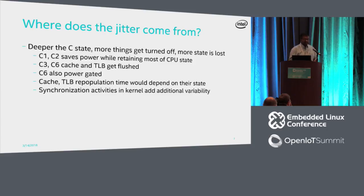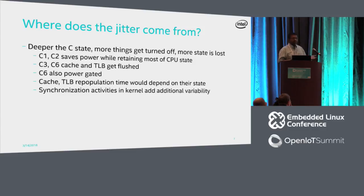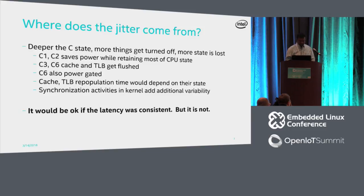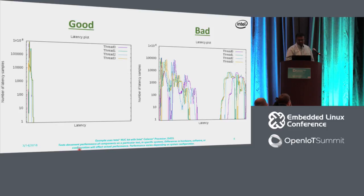When turning back on things that were turned off, the kernel may need to do synchronization, may have to disable interrupts, and PLLs may need relocking — all of which introduce jitter. If all these things happened in a consistent manner, even larger latency would be acceptable. But the latency is actually jumping around — that is the problem we are going to solve.